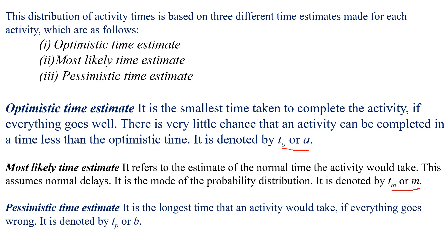The last one is the pessimistic time estimate. It is the longest time that an activity would take if everything goes wrong. It is denoted by Tp or B.